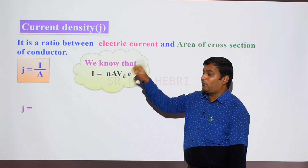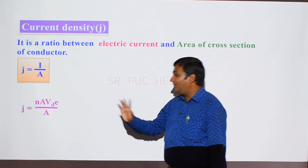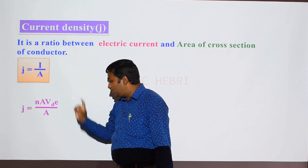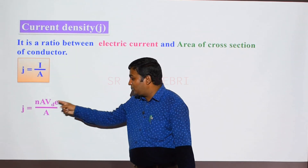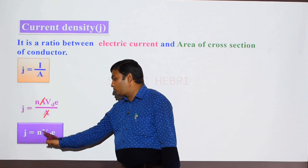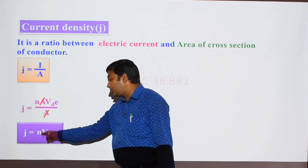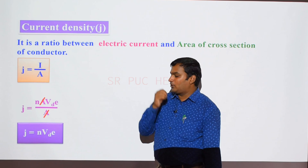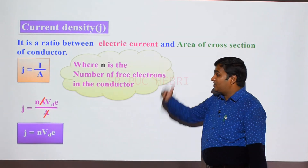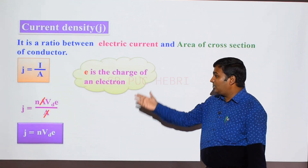Rearranging the current density equation by substituting I equals N A Vd e, we get j equals N A Vd e divided by A. The A terms cancel, giving us the formula: J equals N into Vd into e. This clearly indicates that current density is directly proportional to drift velocity. N is the number of free electrons, Vd is the drift velocity, and e is the charge of an electron.